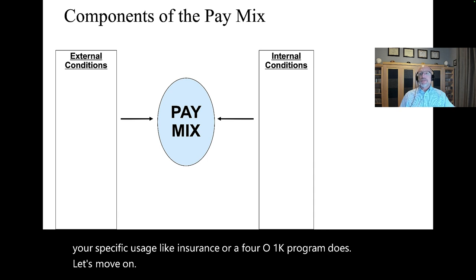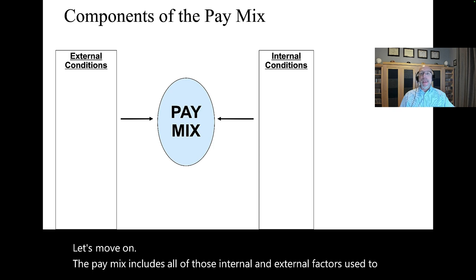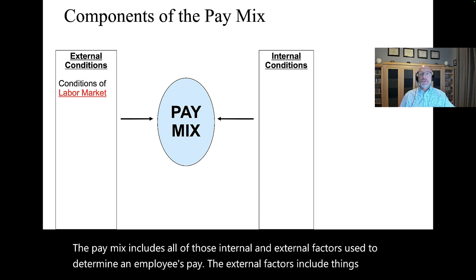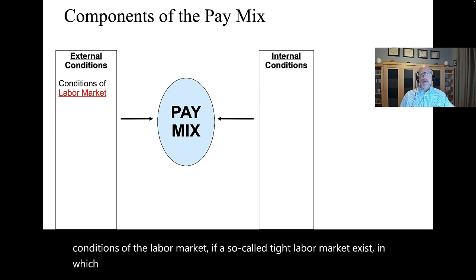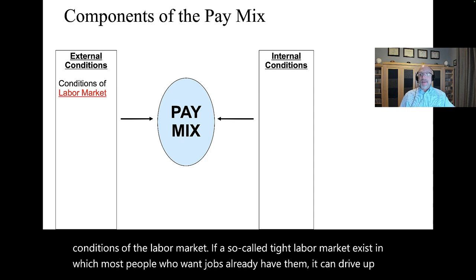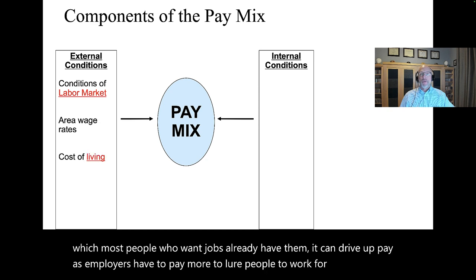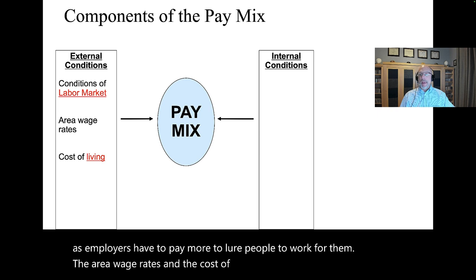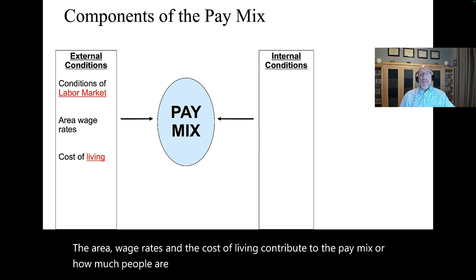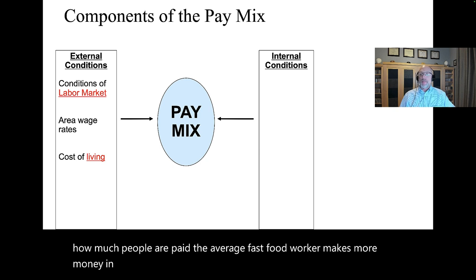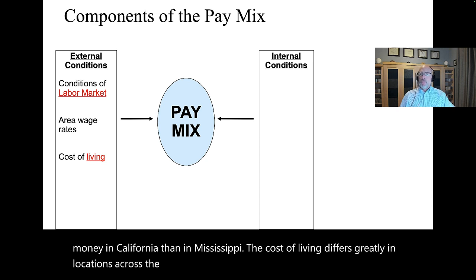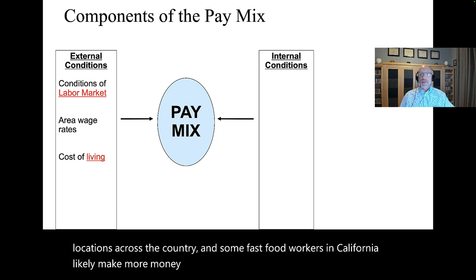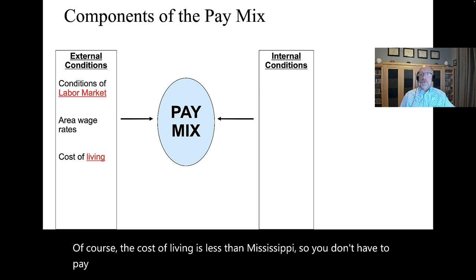The pay mix includes all internal and external factors used to determine an employee's pay. External factors include conditions of the labor market. If a tight labor market exists in which most people who want jobs already have them, it can drive up pay as employers have to pay more to lure workers. Area wage rates and the cost of living also contribute to the pay mix. The average fast food worker makes more in California than in Mississippi, and the cost of living differs greatly across the country.